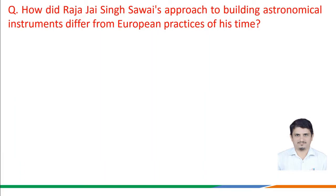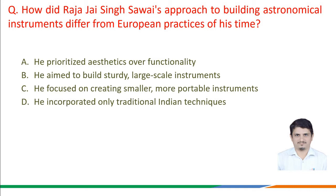The next question is: how did Raja Jaisingh Sawai's approach to building astronomical instruments differ from European practices of his time? Option a) he prioritized aesthetics over functionality, option b) he aimed to build sturdy large-scale instruments, option c) he focused on creating smaller, more portable instruments, option d) he incorporated only traditional Indian techniques.